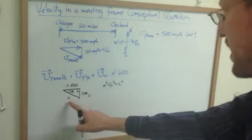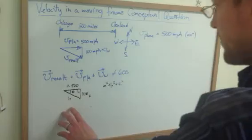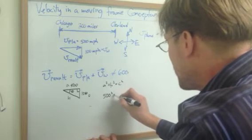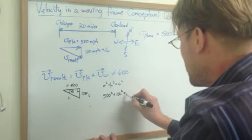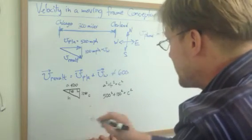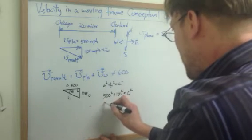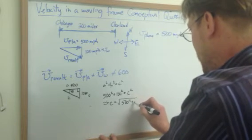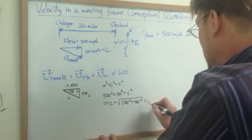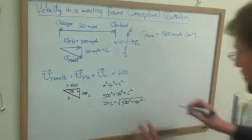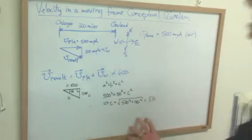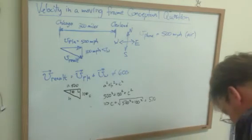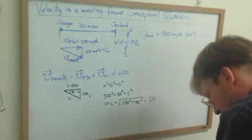So to find this hypotenuse, or the resultant velocity here, I'm going to say 500 squared plus 100 squared is equal to C squared. Therefore, C is equal to the square root of 500 squared plus 100 squared. And if you push that through a calculator, you can see that the velocity is 510, using geometry.